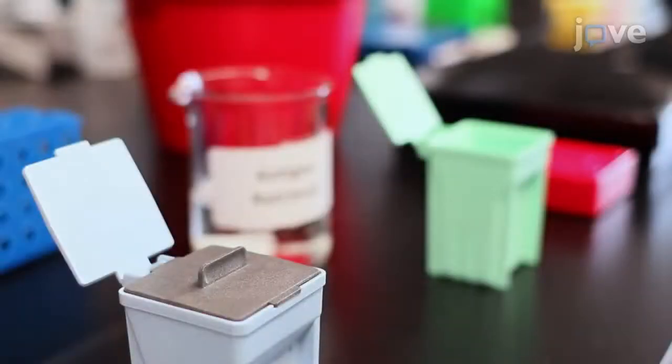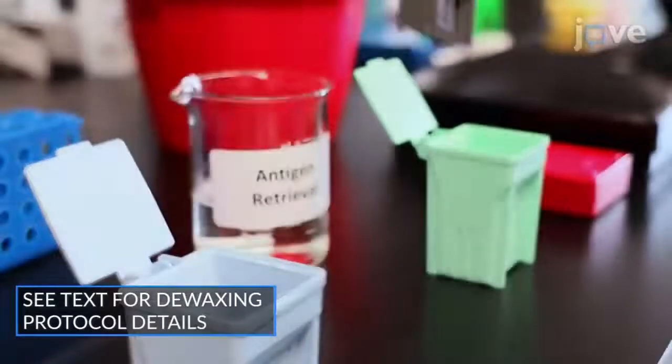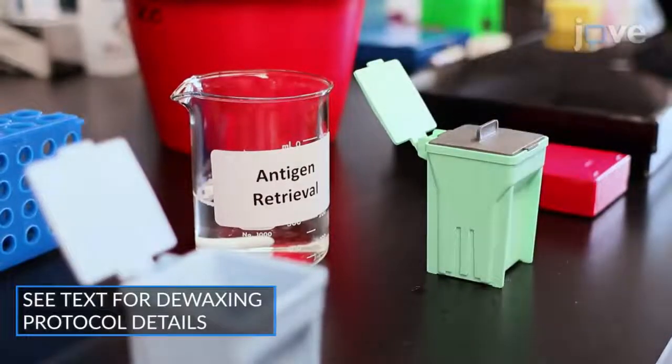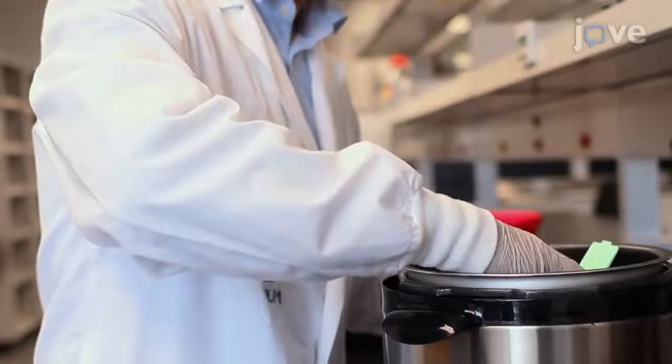For antigen retrieval of formalin-fixed, paraffin-embedded tumor tissue sections, immerse the de-waxed tissue sample in a Coplin jar of antigen retrieval solution and place the jar into an electric pressure cooker containing tap water.